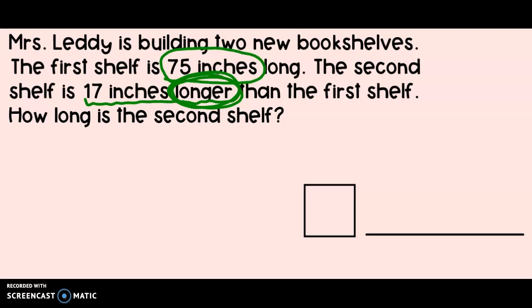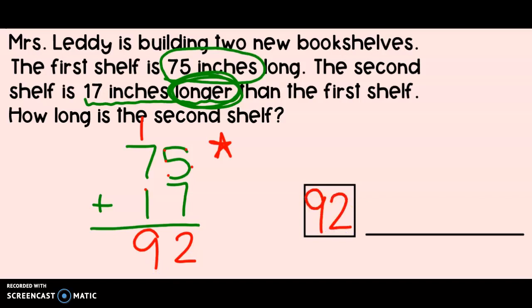It's going to be bigger. And if I need a bigger number, that means I'm going to need to add. Just like we always do, let's start in the ones. 7 plus 7 is 10, 11, 12. Oh, I made a new 10. 7, 8, 9. The second shelf is 92 inches long. That's a very long shelf. I wonder what she's using it for.